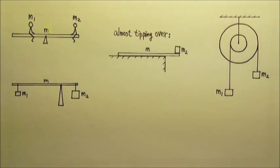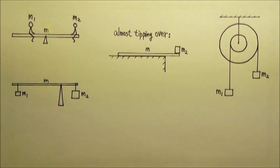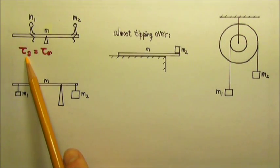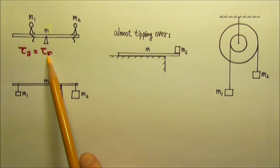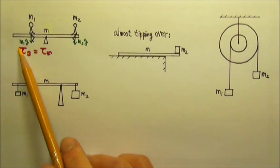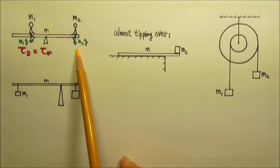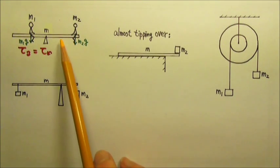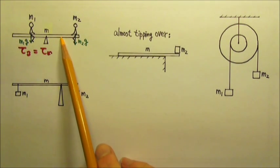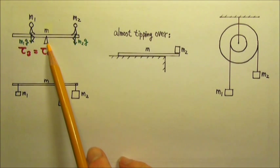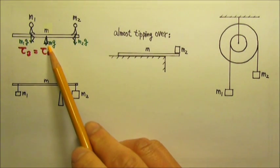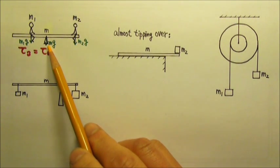We have also worked on balance problems. When they are balanced, there is no rotation, so the net torque must be zero, which means clockwise torque must equal counterclockwise torque. For this seesaw, the torques are produced by M1g and M2g. If the beam is uniform and the fulcrum is at the center, then the mg of the beam would have zero lever arm and therefore zero torque.